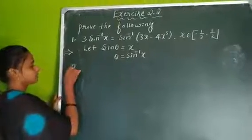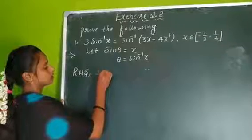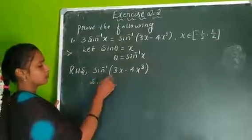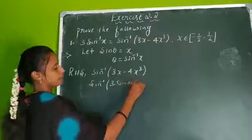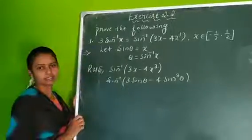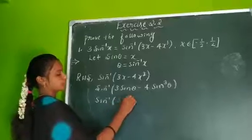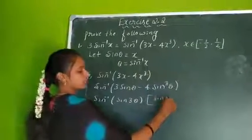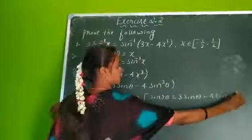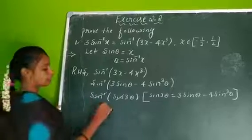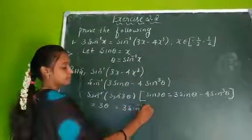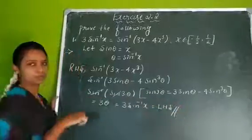Now consider the RHS: sine inverse of (3x minus 4x cube). Substitute x = sine theta: this becomes sine inverse of (3 sine theta minus 4 sine cube theta). This is the formula for sine 3 theta, because sine 3 theta = 3 sine theta minus 4 sine cube theta. So sine inverse and sine cancel, remaining is 3 theta. Now 3 theta = 3 sine inverse x, which is the LHS. Hence proved.